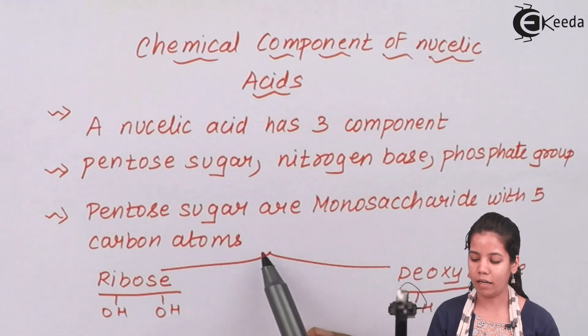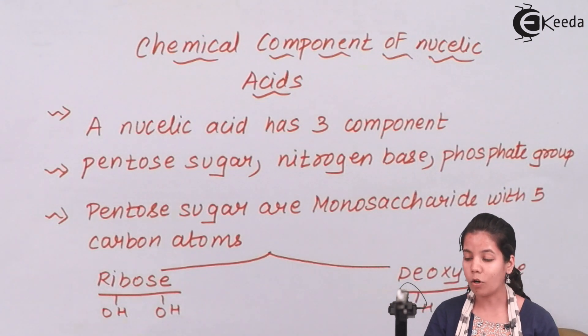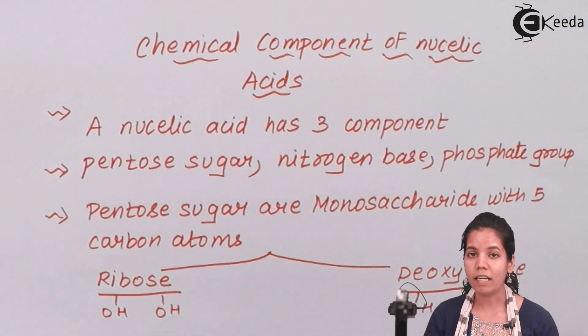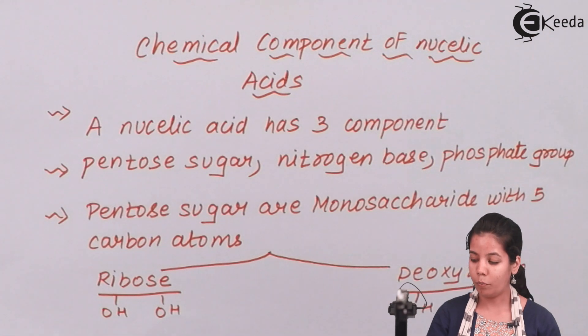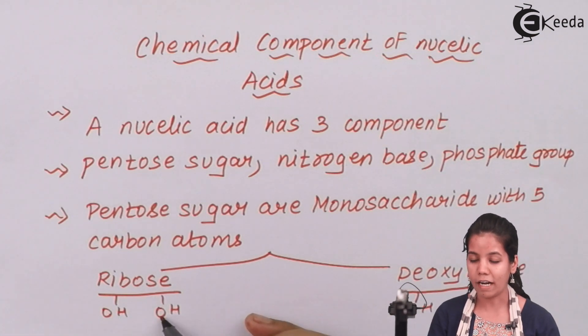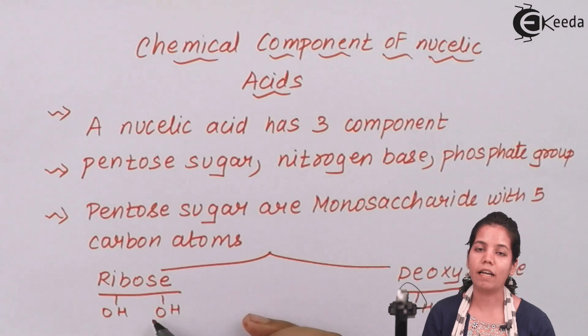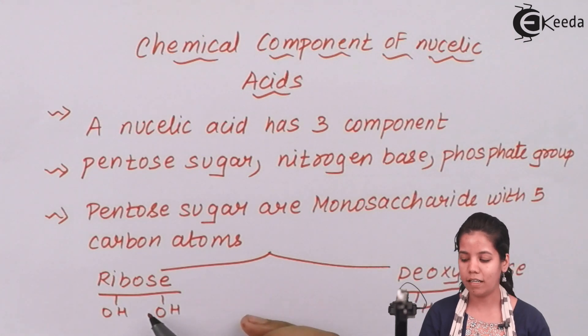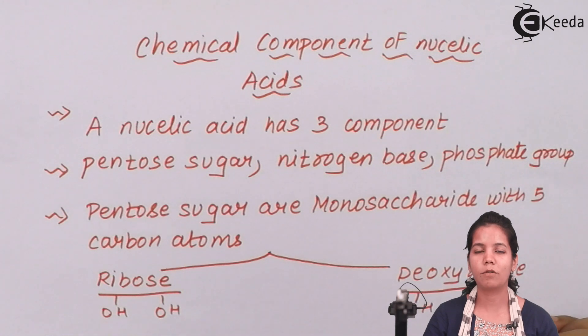Now pentose sugar can be of two different types depending upon whether they are present in DNA or in RNA. In DNA they are deoxyribose, when I say deoxyribose it means D means removal, so one oxygen atom is removed which is in DNA, whereas in RNA both the oxygen atoms are present. That is why RNA is called ribose nucleic acid and DNA is called deoxyribose nucleic acid.